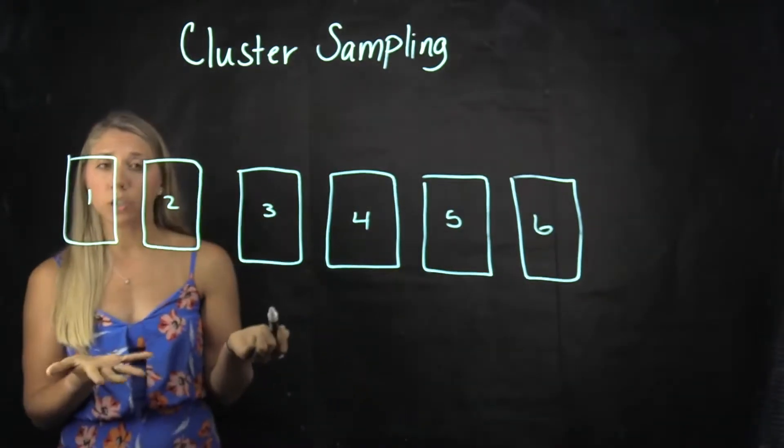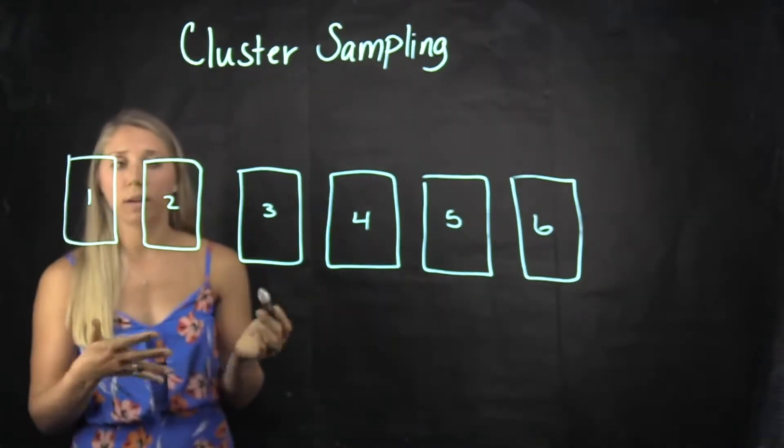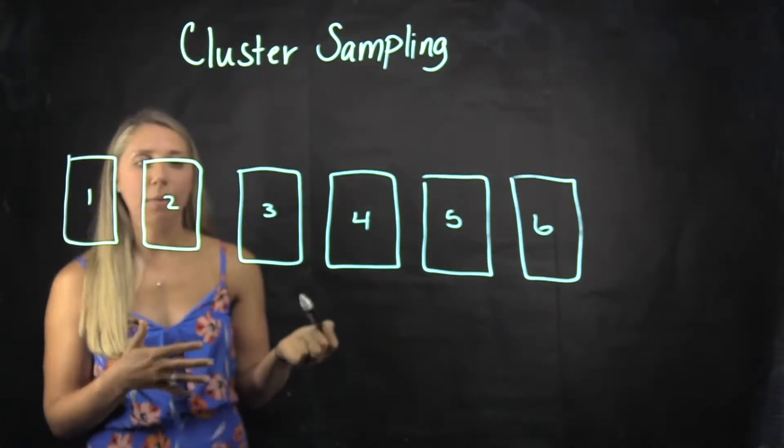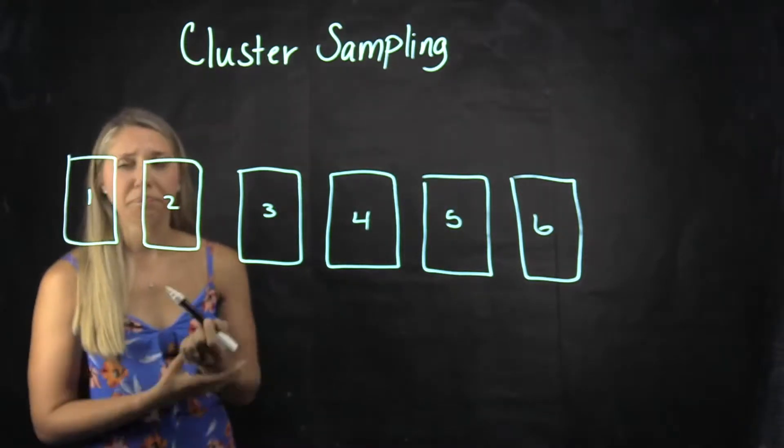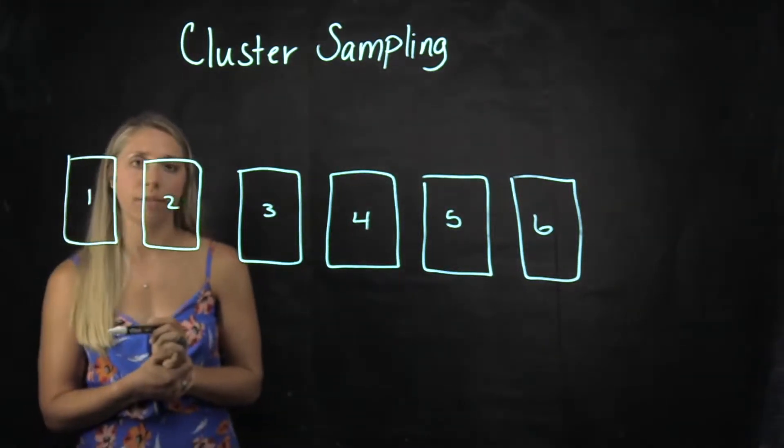In a random number generator, I would then put one comma six, and let's say I want to pull 50 students total to survey.